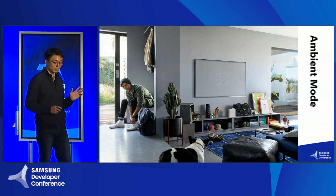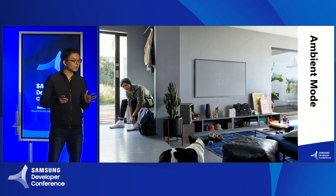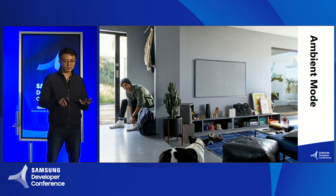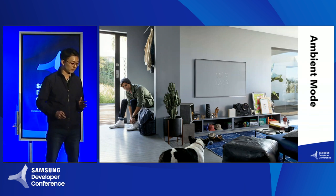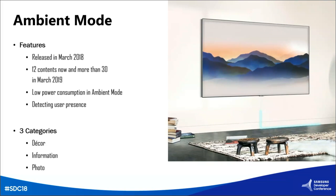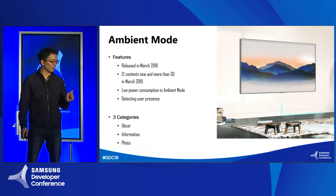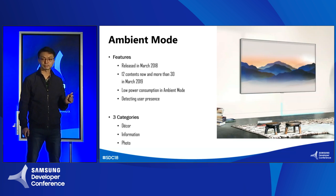Do you like it? The TV will always be on, but actually if there is nobody in the living room, it will be turned off. There are some features of Ambient Mode and it's very similar to The Frame. We have defined three types of contents: decoration, information, and photo. Let me explain the three categories.